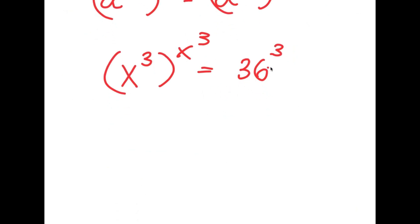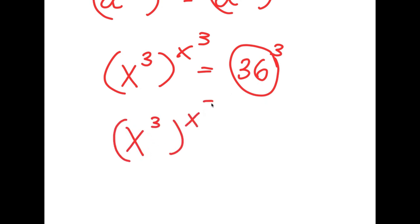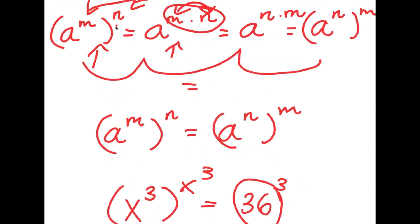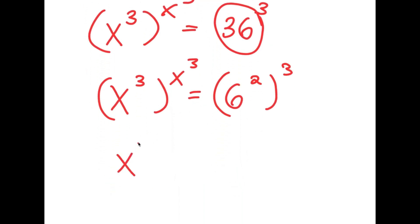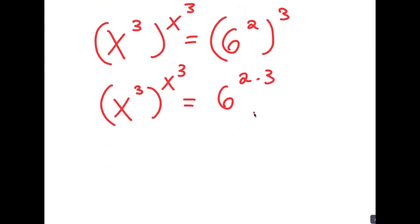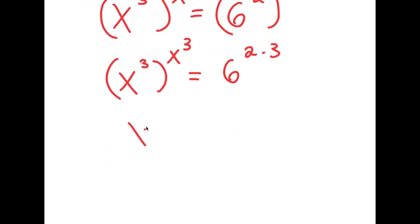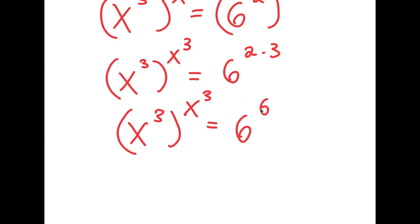Now I rewrite 36 as 6 squared, so I have x³ to the power of x³, equal to 6 squared to the power of 3. Applying the (a^m)^n = a^(m×n) rule on the right side, 6 squared to the power of 3 equals 6 to the power of 2 times 3, which is 6 to the power of 6. So x³ to the power of x³ equals 6 to the power of 6.